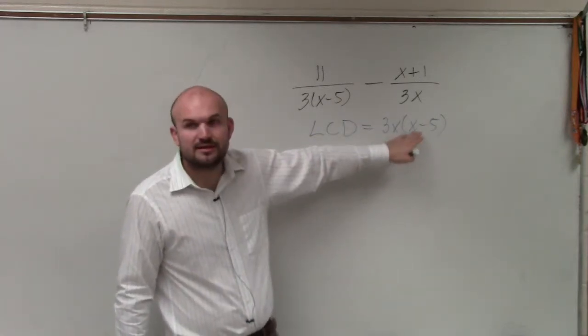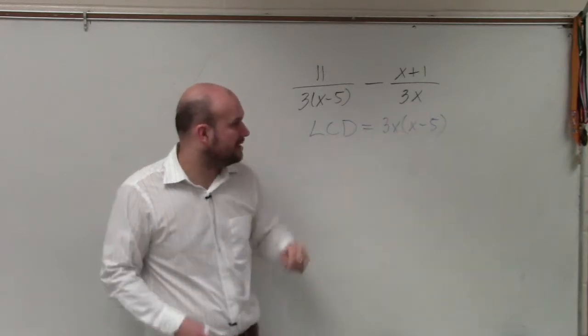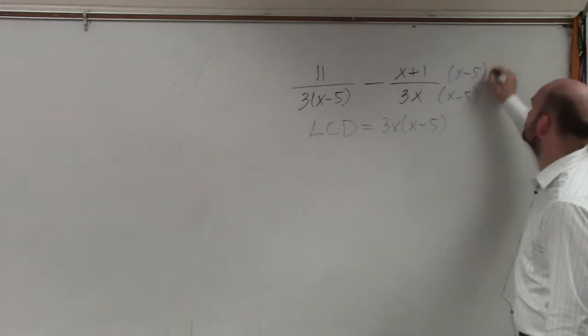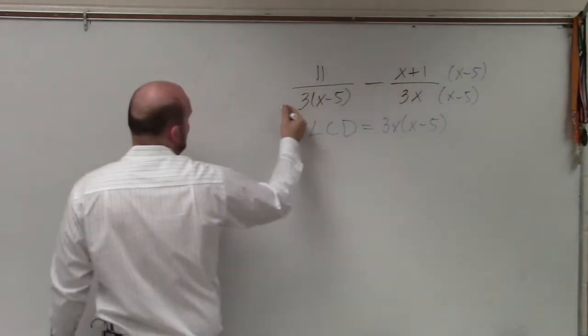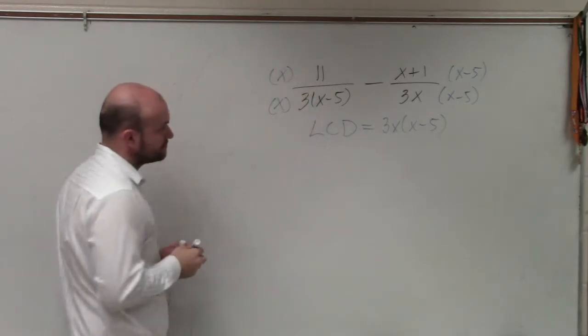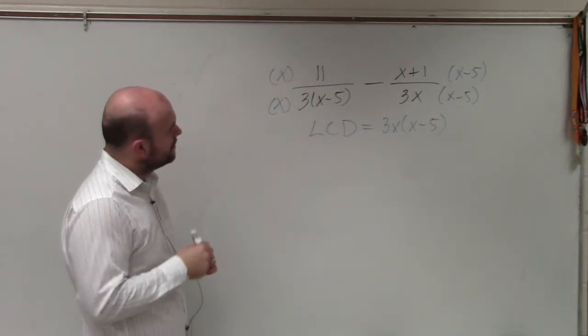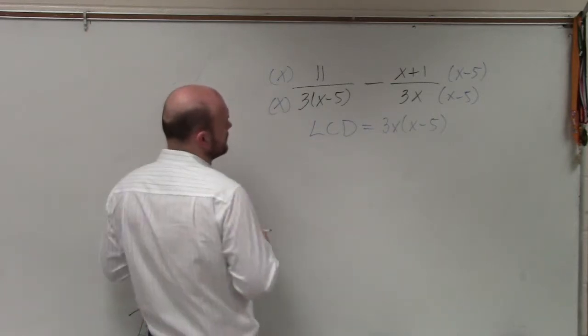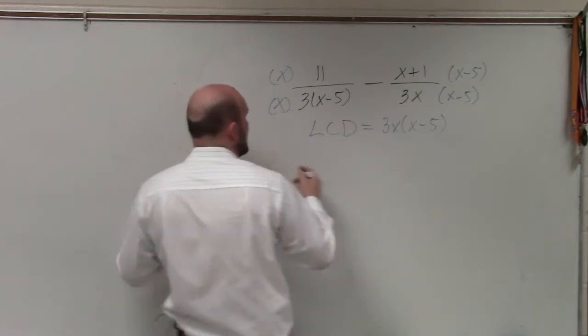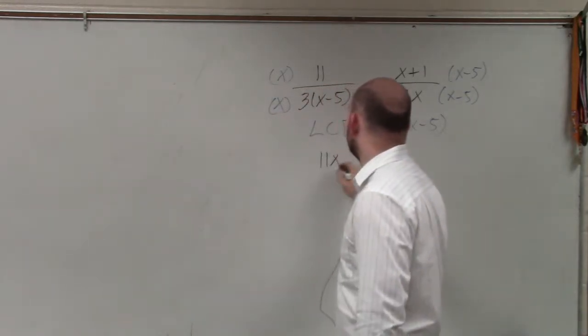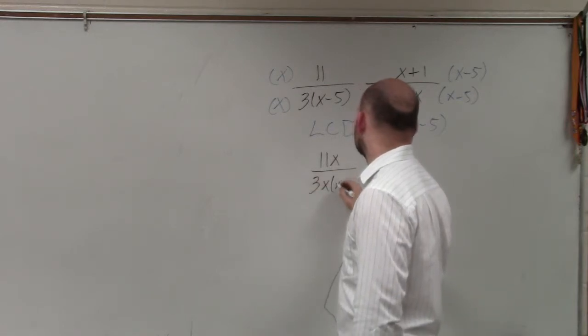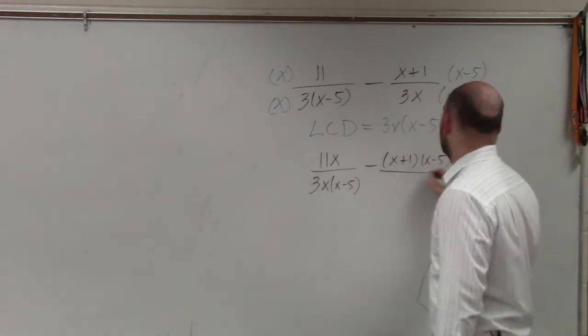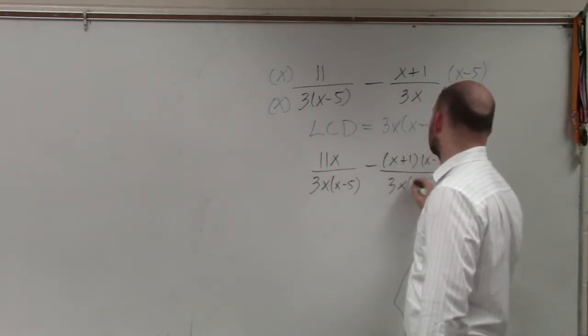So therefore, to get this fraction or this denominator to be our LCD, I need to multiply it by x minus 5 over x minus 5. To multiply this to be our LCD, I need to multiply it by x over x. So now, basically, I'll multiply them, and I get 11x over 3x times x minus 5 minus x plus 1 times x minus 5 all over 3x times x minus 5.